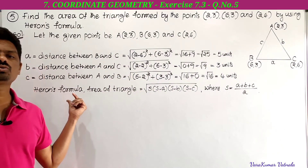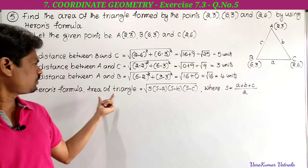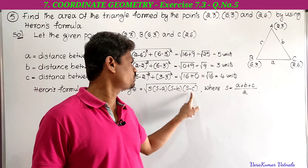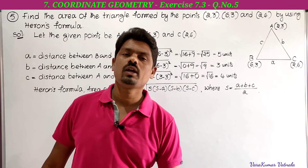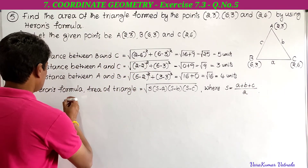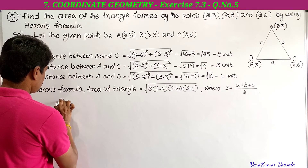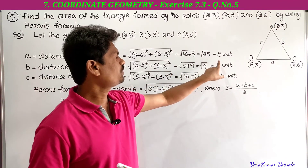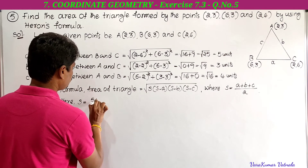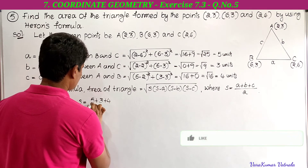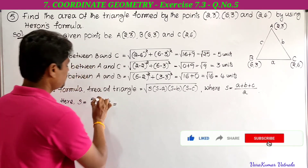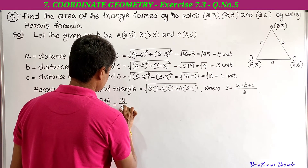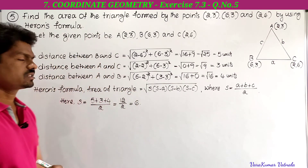Now we use Heron's formula: area = √[s(s−a)(s−b)(s−c)], where s = (a+b+c)/2. So s = (5+3+4)/2 = 12/2 = 6. Therefore s = 6.